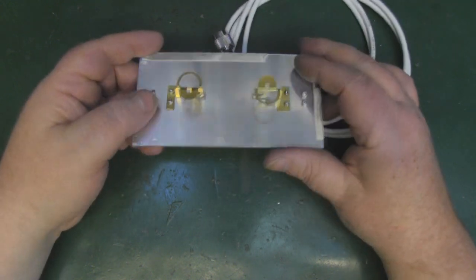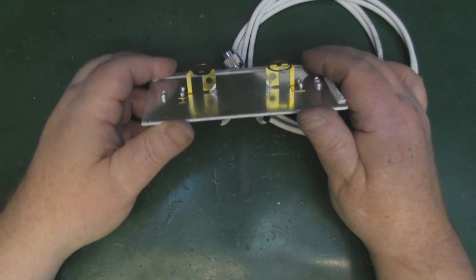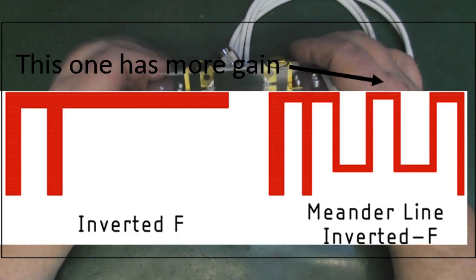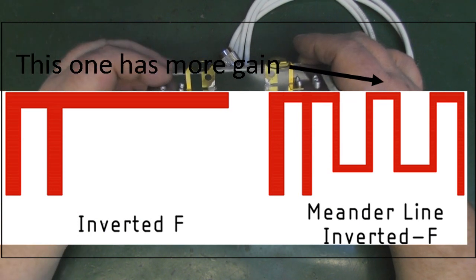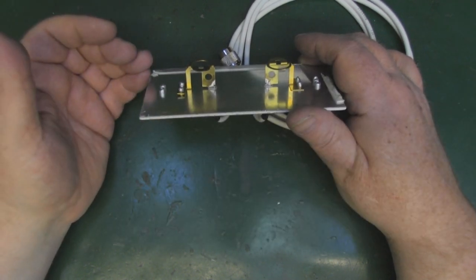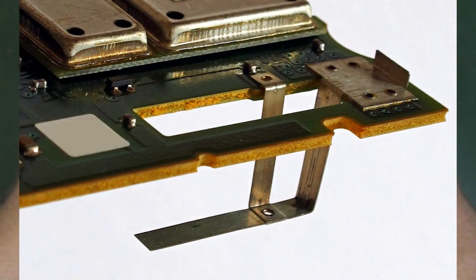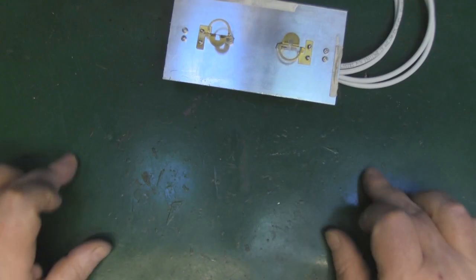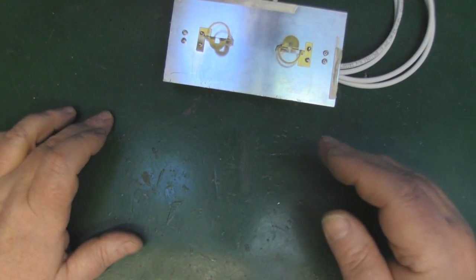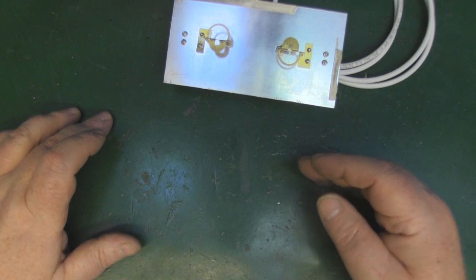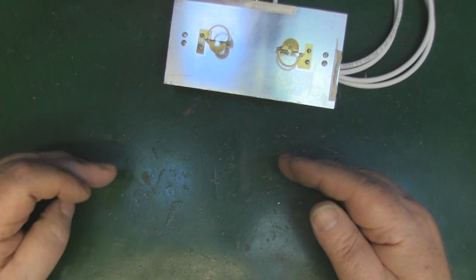Netgear used to use them a lot back in the day with their little routers. They'd have an F-type antenna - one in the horizontal and one in the vertical.